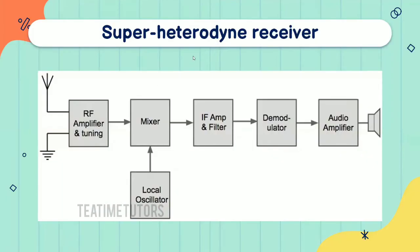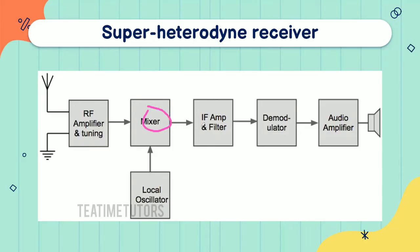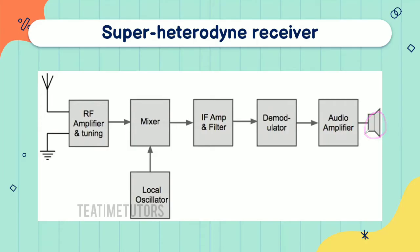This is the Super Heterodyne Receiver Block Diagram. First of all, here is an antenna, and next is the RF stage — Radio Frequency. Next is the Local Oscillator. Next is the Mixer. This is the Intermediate Frequency. Next is the Demodulator. This is the detector, this is the audio amplifier, and a loudspeaker. So, in each block we are going to show you the working and functions of a complete super heterodyne receiver.